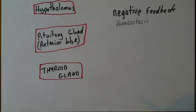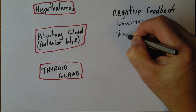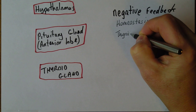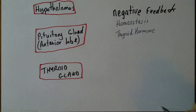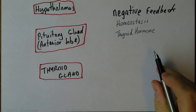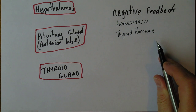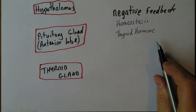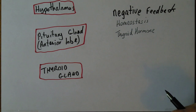Thyroid hormone is essential to regulate the amount of metabolism going on in the body, essential during growth and development for normal growth of the body, and essential for normal development of the nervous system. But we don't want too much, because we don't want it to overstimulate metabolic processes.